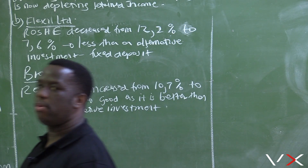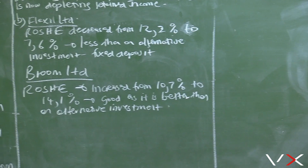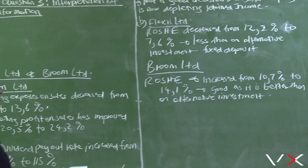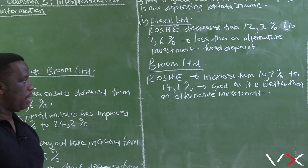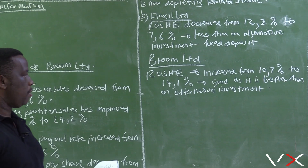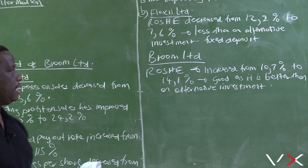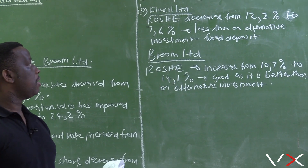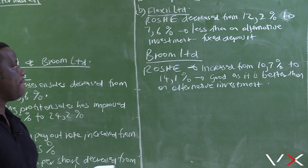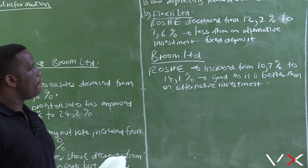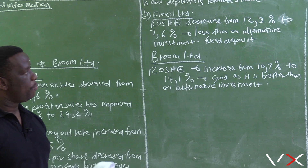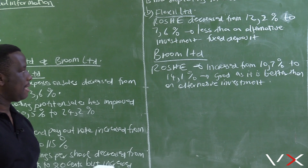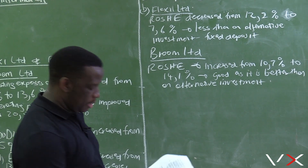The return on shareholders equity should always be compared to an alternative investment, and we are very pleased with the results from Broom Ltd. The return on shareholders equity increased from 10.7 percent to 14.1 percent, which is good as it is better than an alternative investment such as a fixed deposit. For Flexi Ltd, however, we are very worried that 12.2 percent has decreased to 7.6 percent, which is even less than an alternative investment.